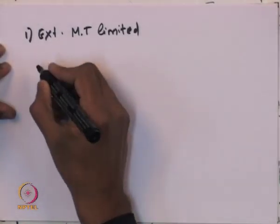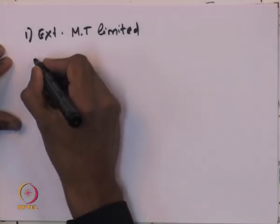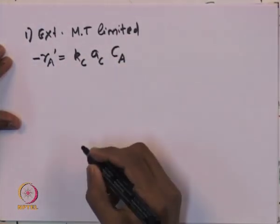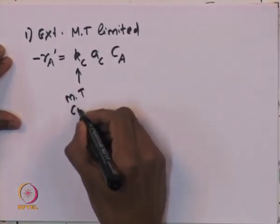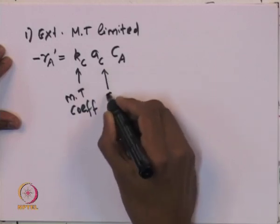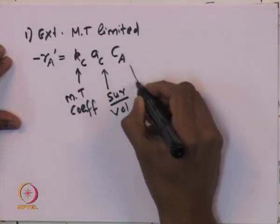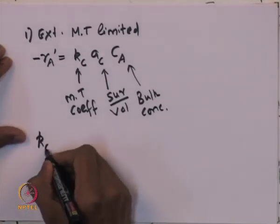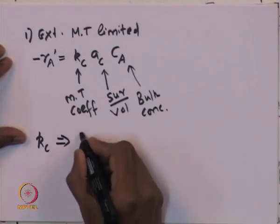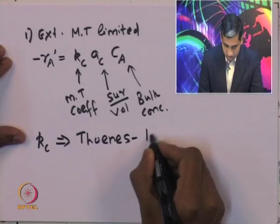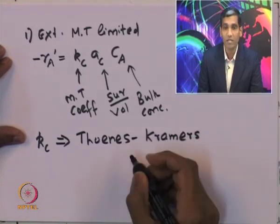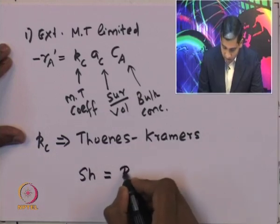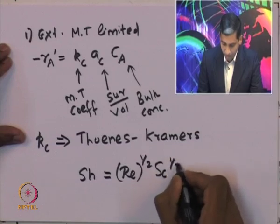Under the external mass transport limitations, the reaction rate is given by kc·ac·CA, where kc is the mass transport coefficient, ac is the surface to volume ratio, and CA is the bulk concentration. kc can be estimated using appropriate correlations such as the Thonnes-Kramer correlation, which states that the Sherwood number equals the Reynolds number to the power of one-half multiplied by the Schmidt number to the power of one-third.